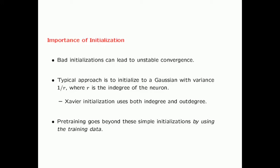In a previous lecture on training deep neural networks, we discussed the importance of initialization in the convergence behavior of the neural network. Bad initializations can lead to unstable convergence. The typical approach is to initialize to a Gaussian with variance 1/r, where r is the in-degree of the neuron. This is useful for controlling the variance which comes out of the neuron, which helps handle the vanishing and exploding gradient problems. More sophisticated forms such as Xavier initialization use both the in-degree and out-degree of the neuron while setting its weights.